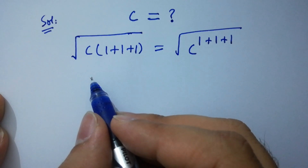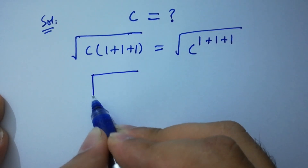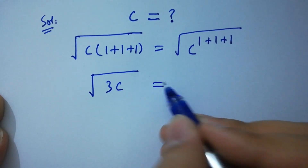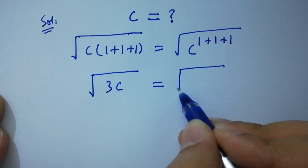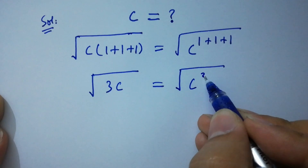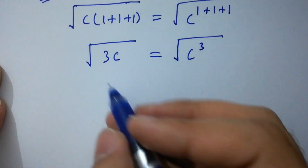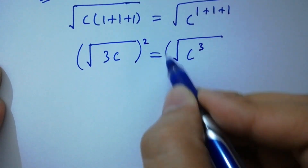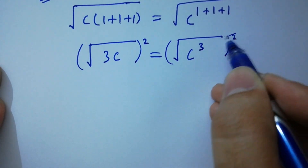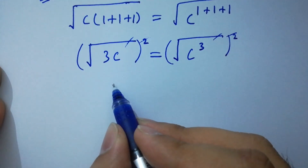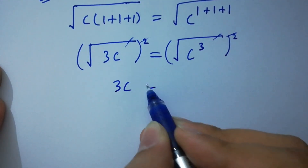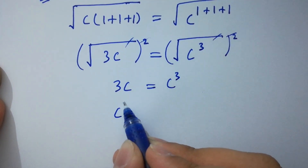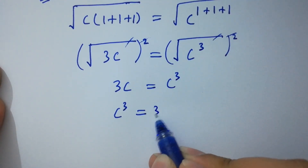On the left hand side we have square root of 3c, equal to square root of c to the power 3. To solve this, take square on both sides — the square cancels from the square root. We have 3c equal to c cubed, which is the same as c cubed equal to 3c.